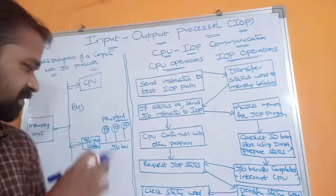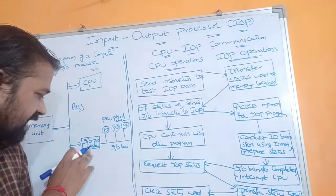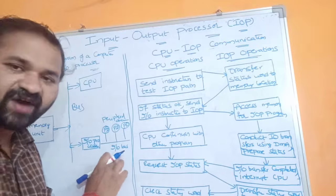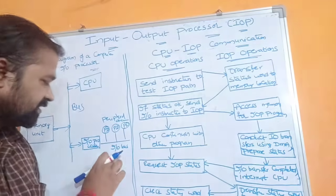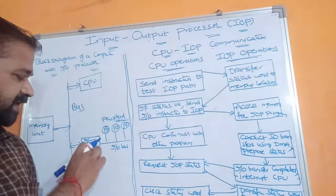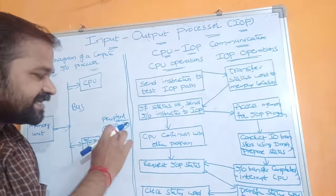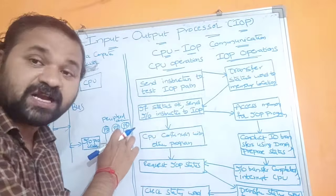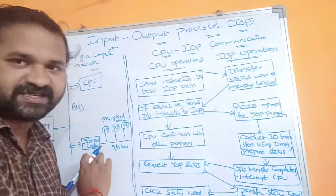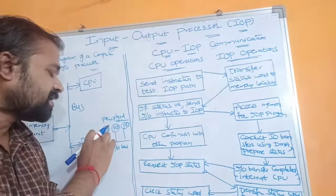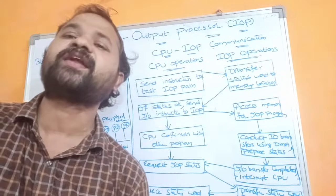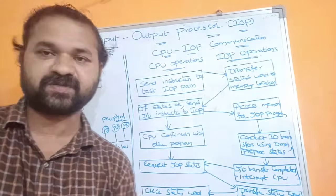If there is any I/O operation, then the CPU allocates the task to the I/O processor. The I/O processor has an I/O bus, and with the help of this I/O bus, several peripheral devices are attached to the I/O processor. These peripheral devices may be either input devices or output devices.